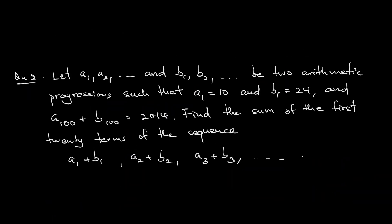Question 2. The question says: let a₁, a₂, … and b₁, b₂, … be two arithmetic progressions, meaning sequences with constant difference. Given that a₁=10, b₁=24, and a₁₀₀ + b₁₀₀ = 2014. The question asks: what is the sum of the first 20 terms of the new sequence a₁+b₁, a₂+b₂, and so on?